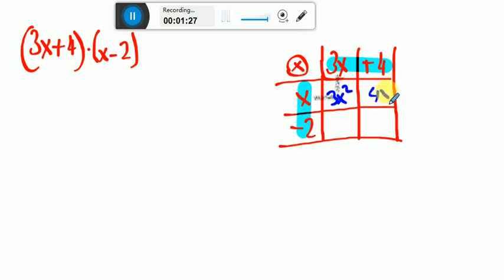Minus 2 goes right, 3x goes down, so they meet in this box. It's gonna be minus 6x. Minus 2 times 4 is minus 8. Then we are going to get these four boxes and add them up. That's it, it's very easy. We'll just add these four boxes.